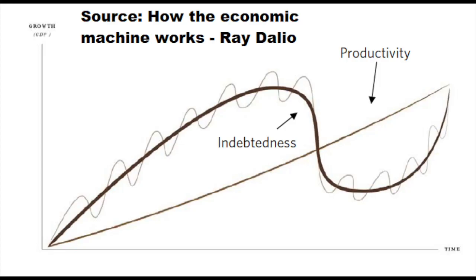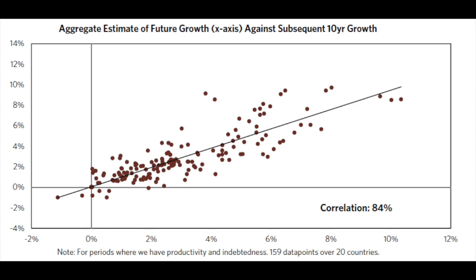There is a simple fundamental formula for what to expect when it comes to economic growth, strength, and future potential. The source is 'How the Economic Machine Works' from Ray Dalio and Bridgewater. The key to economic growth is productivity, which can be enhanced with debt and unfortunately also slowed down when you have to deleverage. Dalio and Bridgewater found pretty good correlations between productivity and debt with future growth — 84% for subsequent 10-year growth.